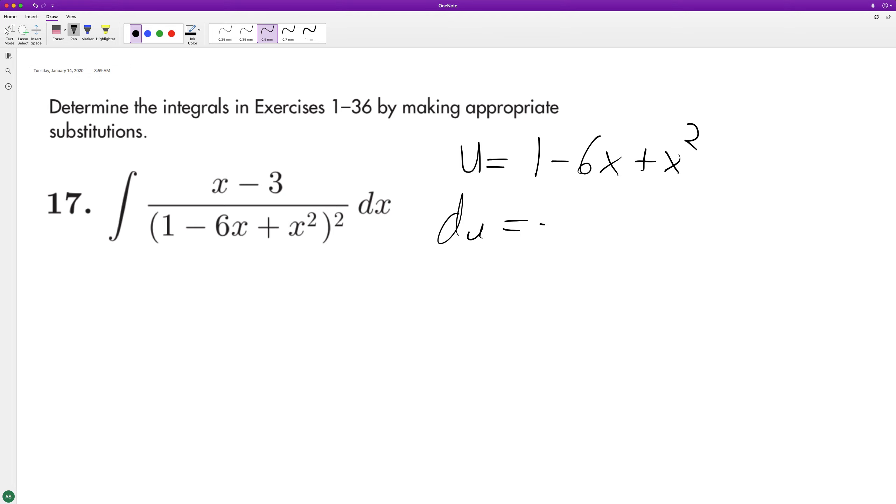Du is equal to negative 6 plus 2x. We can flip this around to be 2x minus 6 and we can factor out a 2, so it's 2 times x minus 3.